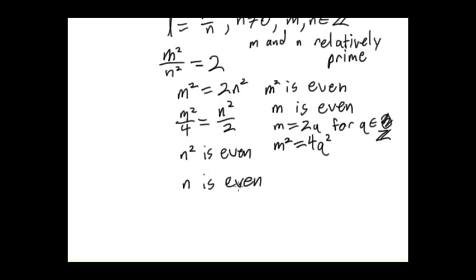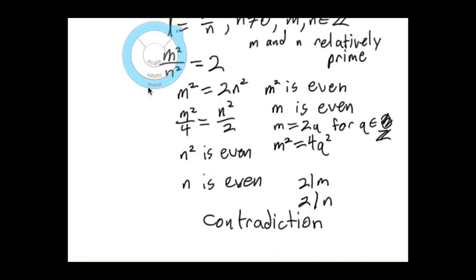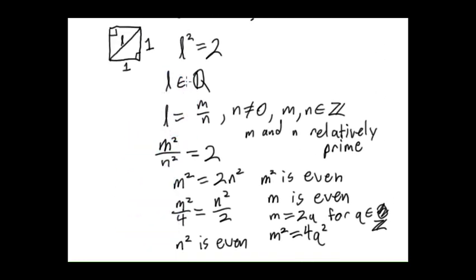This is a problem because we assumed that m and n were relatively prime. This says that 2 divides m, that line just means divides, and 2 divides n. This is a contradiction. So one of our assumptions must have been off. If we go back, we see that we assumed that L was in Q. So that must be false.